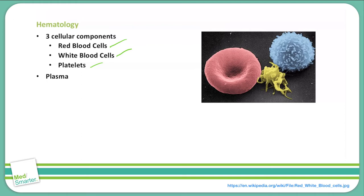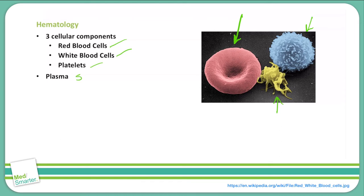You can see a picture of this here over on the right side. The red blood cells are obviously red in color in this scanning electron microscope photo. The white blood cells here are in blue — those are varying sizes and shapes — and then you have the platelets here in yellow. All of these cellular components are suspended in plasma, which makes up about 55% of the total blood volume.